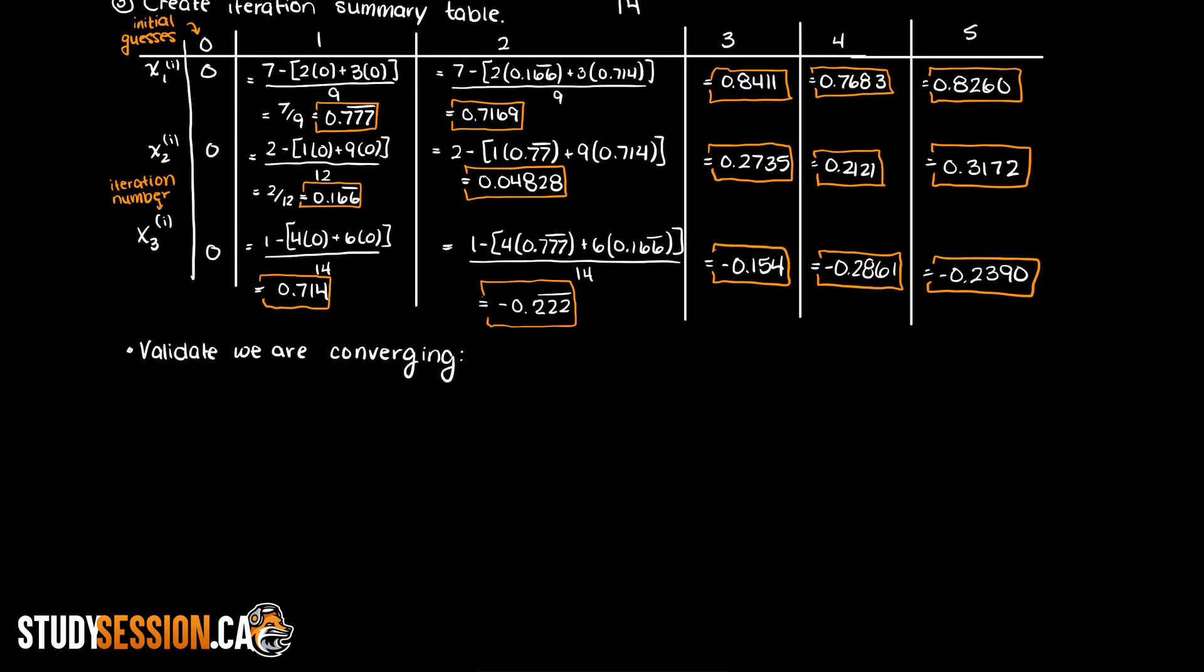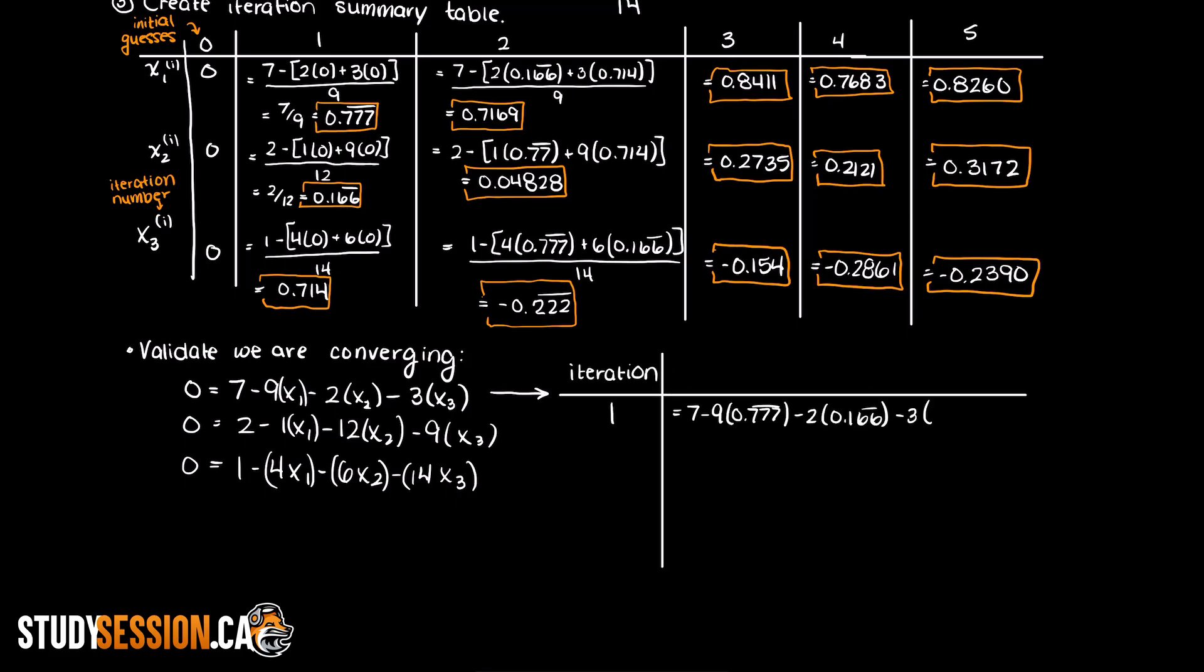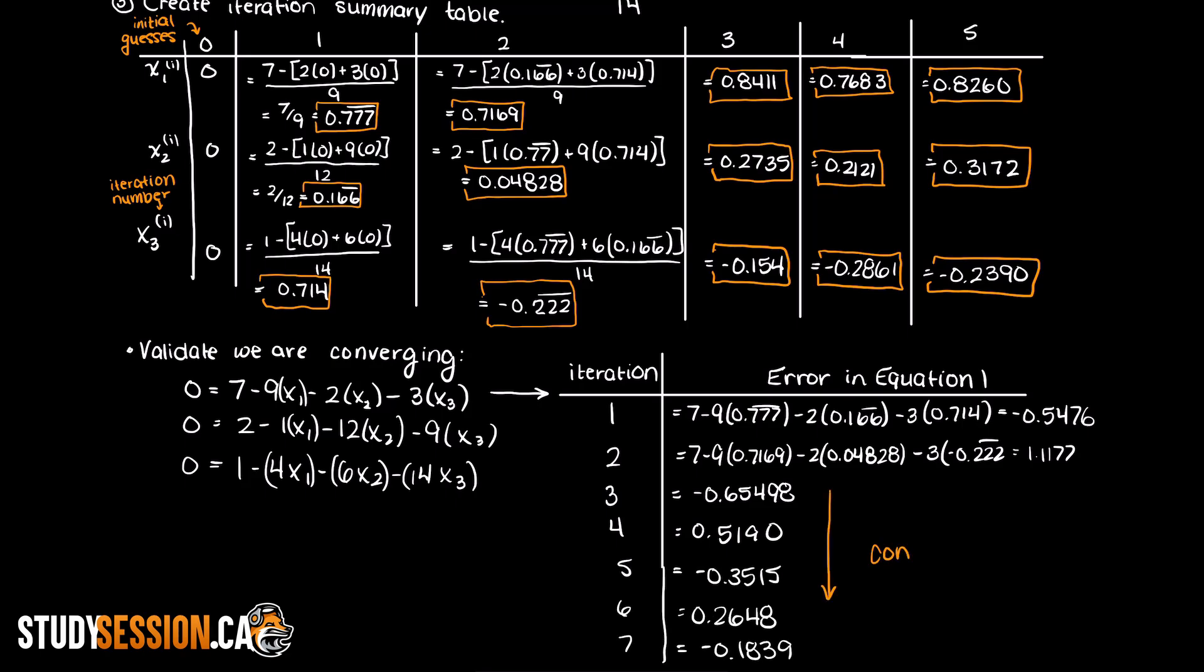Let's validate that we are converging on an answer though, which you may have to do if you are doing this by hand on a test for example. Let's set all of our equations equal to zero and then plug in our x values at each iteration. I am just going to do this for equation 1 but the exact same process should be followed for the other two independent equations. As you can see here with every iteration we are getting closer to zero which is exactly what we want. This proves that we are converging on a solution.